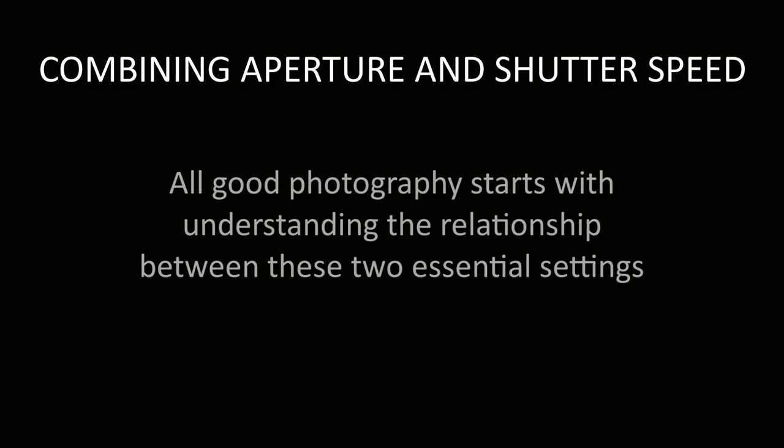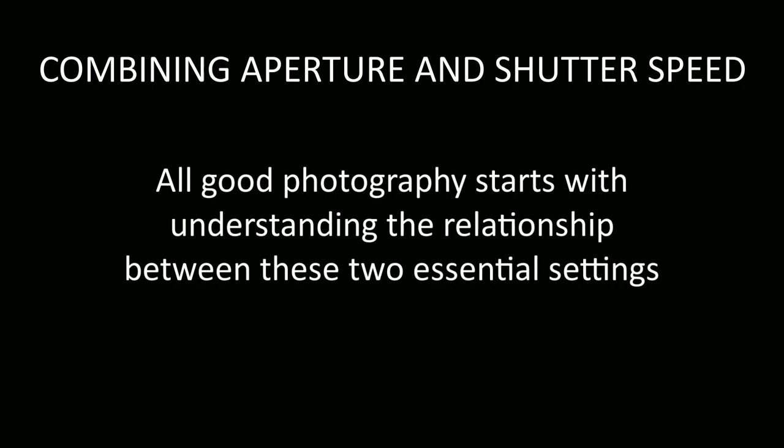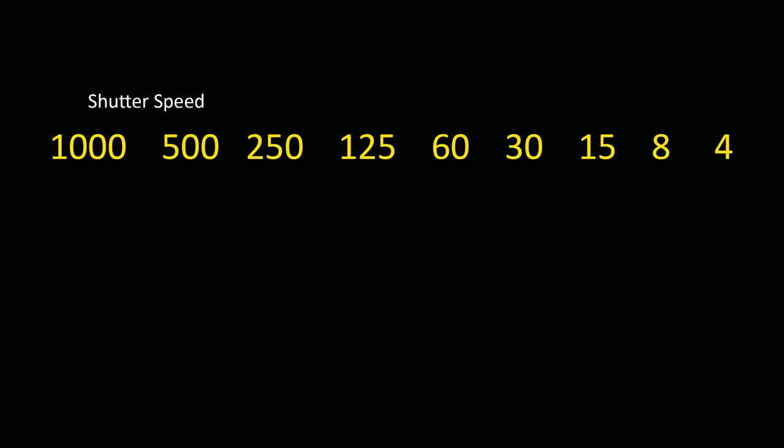Now here's the important bit. Exposure is not about aperture or shutter speed — it's about aperture and shutter speed combined. So now I'm going to explain how the two pieces fit together. And because this series is all about manual mode, we'll also be looking at how we use the light meter to keep the exposure under control. Let's start with shutter speed.